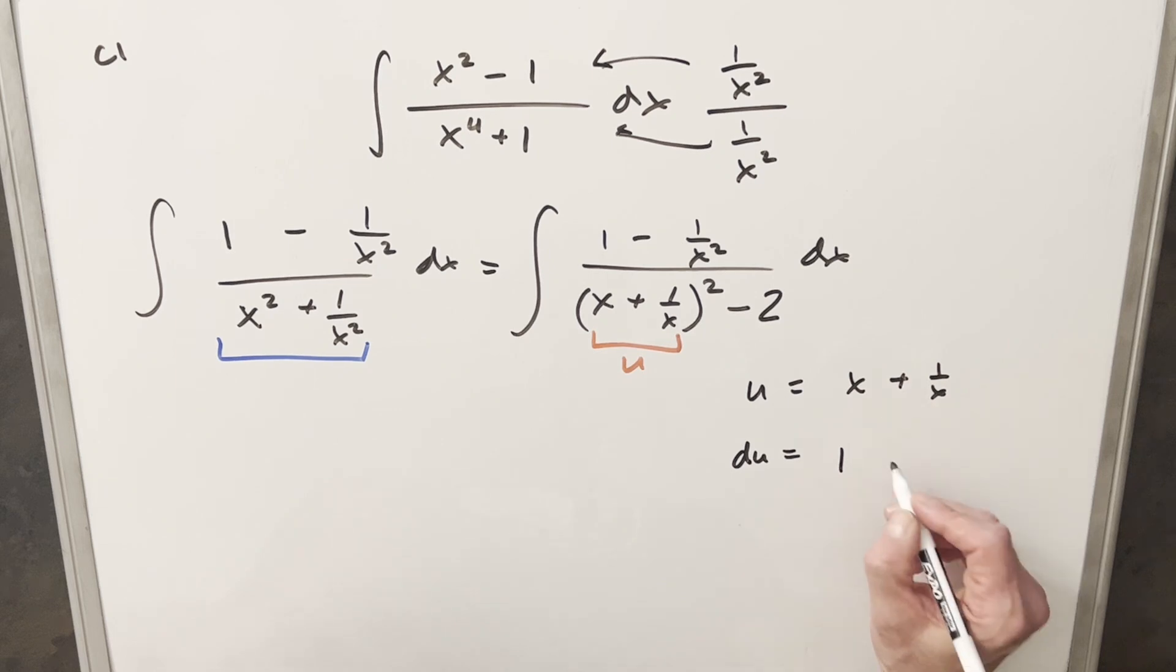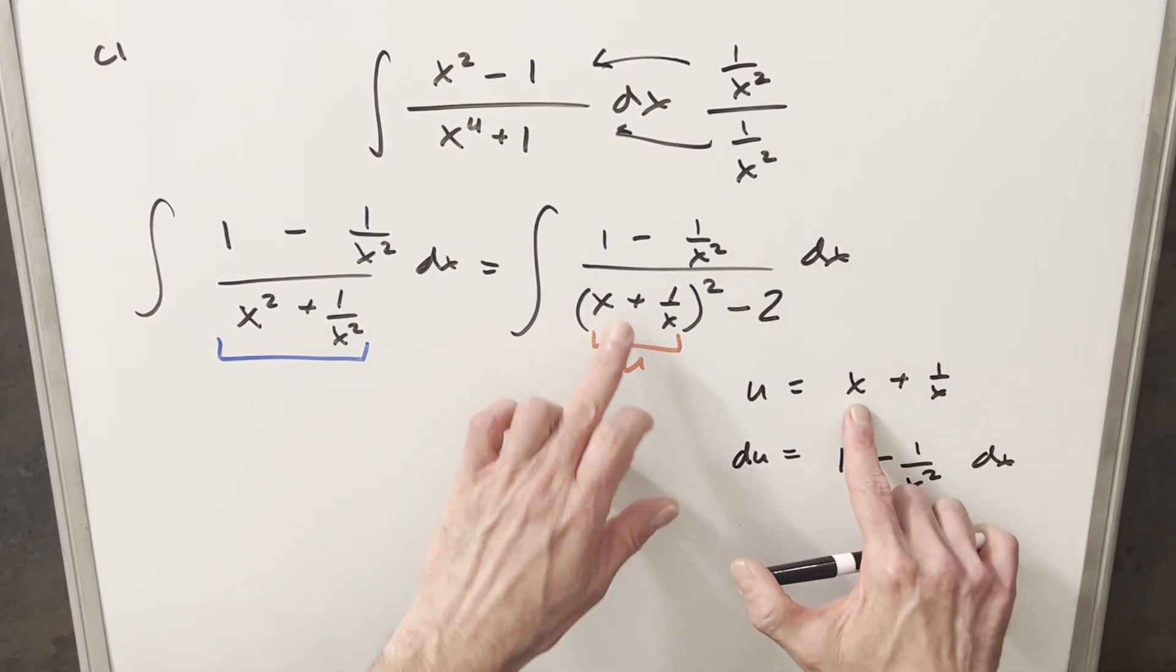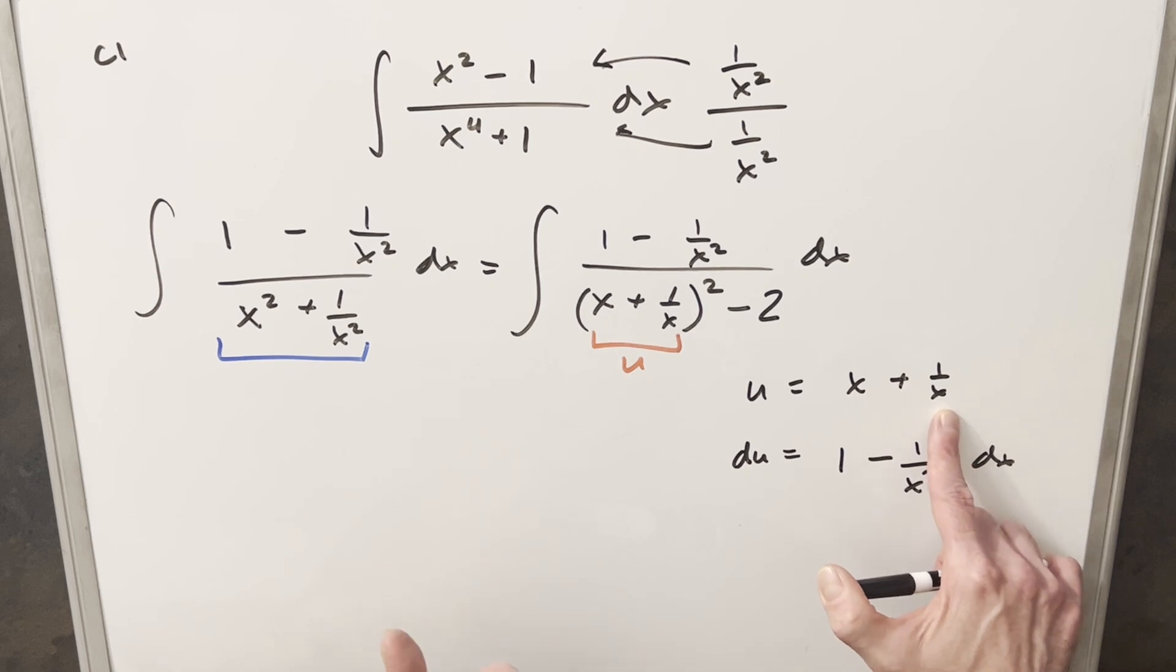Derivative of 1 over x, this is minus 1 over x squared dx. We matched our numerator exactly. So you just notice if we factor this as x minus 1 over x, when we took this derivative, we'd have a plus sign here. Not what we want.